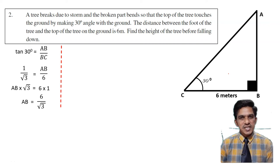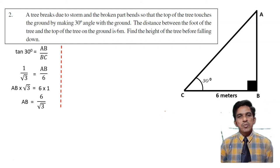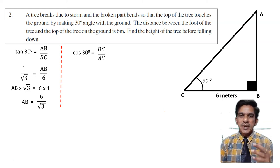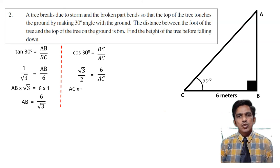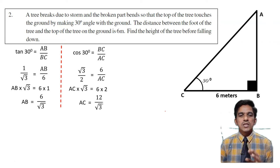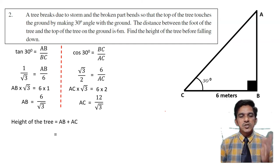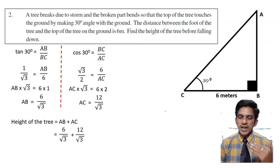Now let us find AC. We need adjacent to hypotenuse, so we use cosine. Cos 30 is adjacent by hypotenuse, that means BC by AC. Cos 30 is root 3 by 2. So root 3 by 2 equals 6 by AC. Cross multiplication gives AC into root 3 equals 6 into 2. Therefore AC equals 12 by root 3. Now the total height is AB plus AC, which equals 6 by root 3 plus 12 by root 3. These are like fractions, so we add the numerators: 6 plus 12 equals 18 by root 3.